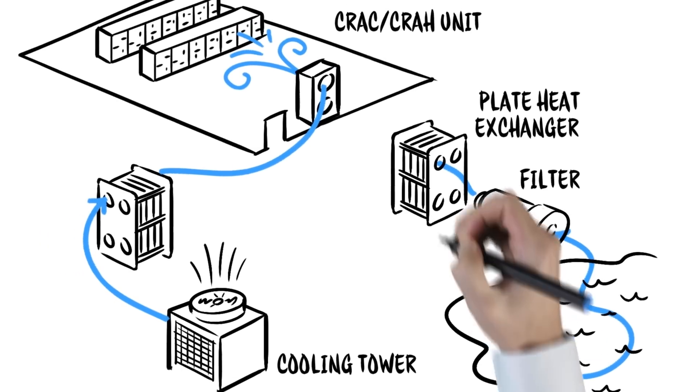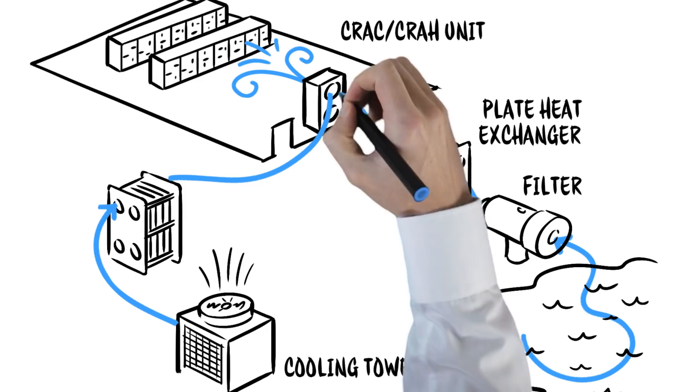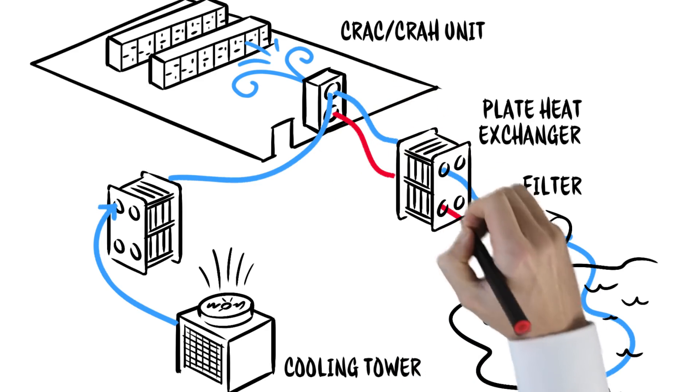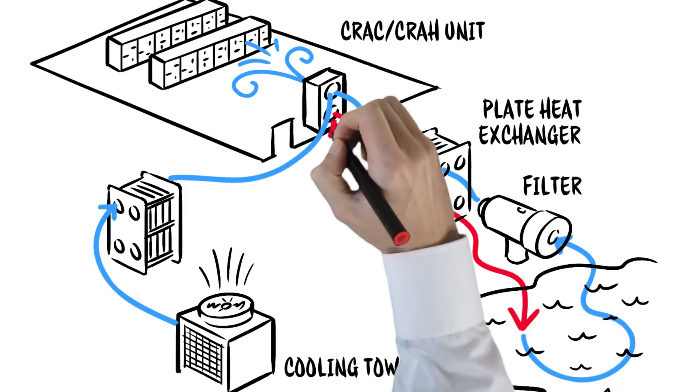Or, it's possible to use the heat exchanger to protect the CRAC and CRAWs from cooling tower water, which may not be as clean as required.